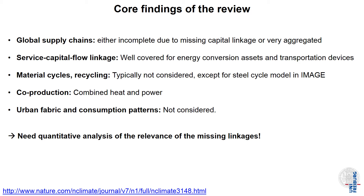Global supply chains are either incomplete due to missing capital linkages or they are very aggregated. The service-capital flow linkages are well covered, but only for energy conversion assets and transportation devices — they are not covered for buildings, for example. Material cycles and recycling activities are almost completely absent in integrated assessment models, with the only exception being a model of the steel cycle in the IMAGE model. For co-production, most models cover combined heat and power in electricity generation, but other types of waste or scrap generation are hardly ever covered. The linkage between urban fabric and consumption patterns in cities is not considered by any of the models.